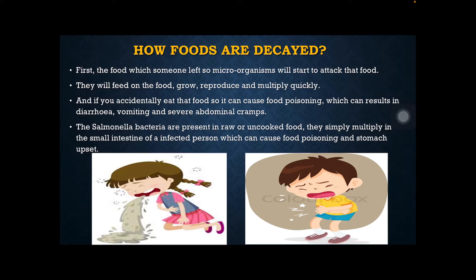The Salmonella bacteria are present in raw or uncooked food. They simply multiply in the small intestine of an infected person, which can cause food poisoning and stomach upset. Basically, foods are decayed when microorganisms attack the food — they feed on the food, grow, reproduce, and multiply quickly.